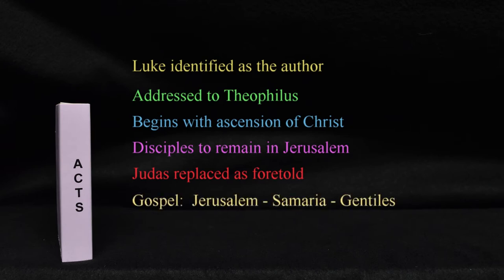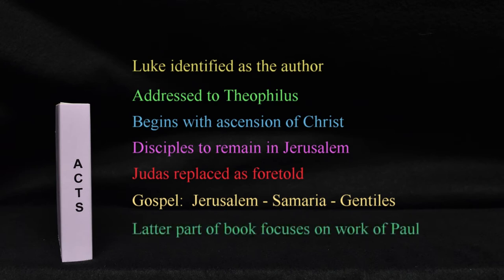Acts details the spread of the gospel beginning at Jerusalem, to Samaria, and then to the Gentiles. The latter part of the book focuses on the work of the Apostle Paul, who, along with his companions, carried the gospel to the Gentile world. The book closes with Paul's first imprisonment in Rome after appealing to Caesar.